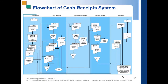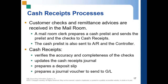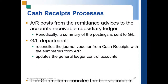Looking at the manual process flowchart, you can see the flow of documents: from the remittance slip — one copy goes to cash receipts, one copy goes to accounts receivable, and one copy of the remittance goes to the controller who transacts with the bank and handles reconciliation. To summarize: cash receipts verifies the accuracy and completeness of the checks, updates the cash receipts journal, prepares the deposit slip, and prepares a journal voucher to send to the general ledger.